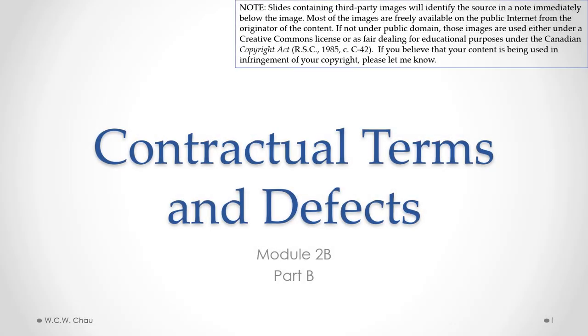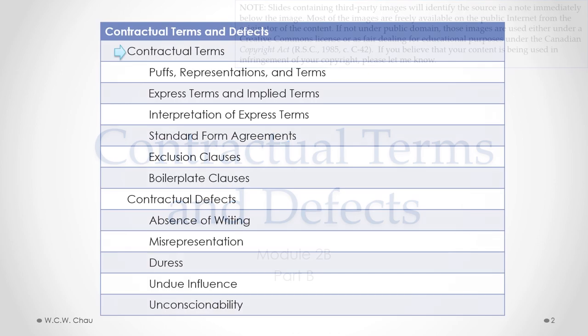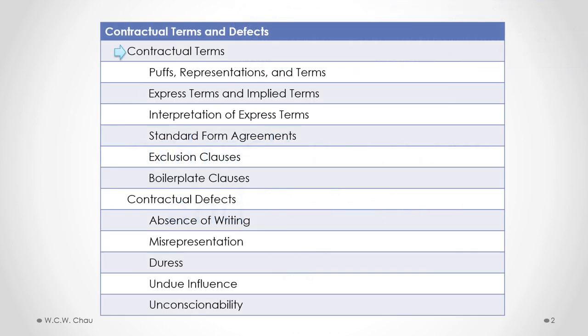Hello, it's Waylon Chow and this is Contractual Terms and Defects, Module 2B, Part B. In this part of the module, we will look at Standard Form Agreements and Exclusion Clauses.